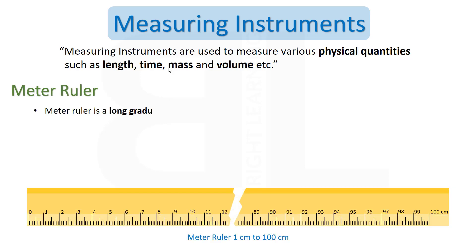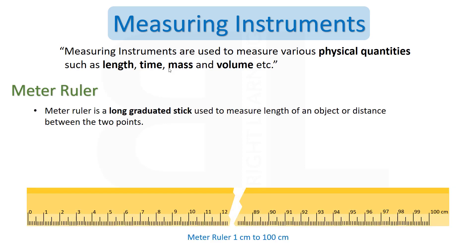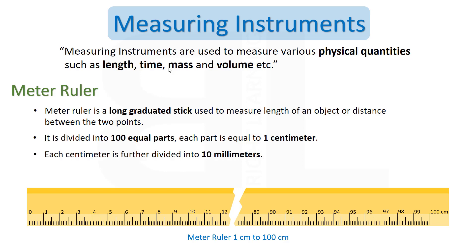Meter Ruler. A meter ruler is a long graduated stick used to measure the length of an object or the distance between two points. It is divided into 100 equal parts, and each part is equal to 1 cm. Each cm is further divided into 10 mm, and the minimum length that can be measured using a meter ruler is up to 1 mm.